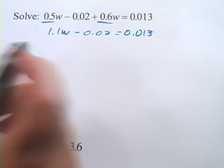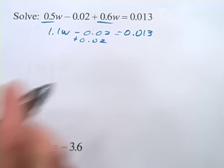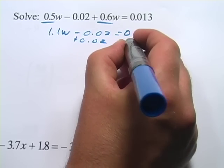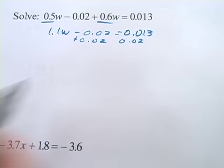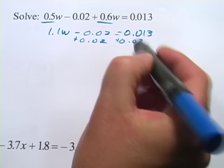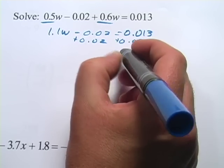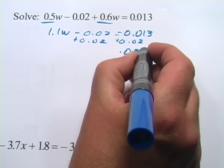Now I just want to go forward getting the W term alone. So I'm going to add 0.02 and just make sure we have our places lined up here so that it works out. So 0.013 and 0.02 is going to come out to be 0.033.